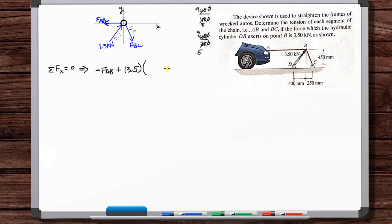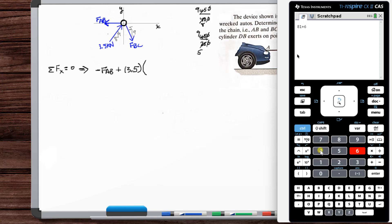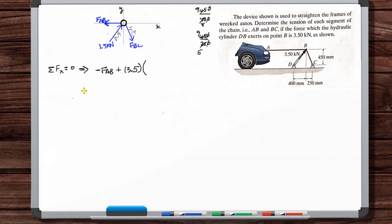So the hypotenuse is 81 plus 64, square root of 81 plus 64. So the square root of 145. And then with 8 on the top. Plus F_BC and so 81 plus 25 is 106. So the square root of 106, you put the hypotenuse in the denominator and then the corresponding component in the numerator. And now this is equal to zero.